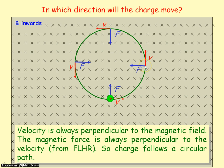If we apply Fleming's left hand rule to the particle at the top of the circle, the second finger points upward and the first finger points into the plane of the screen, so the thumb points to the left — the magnetic force is to the left. At the leftmost point, the second finger points left, the first finger into the screen, and the thumb points downward — so the magnetic force is downward.